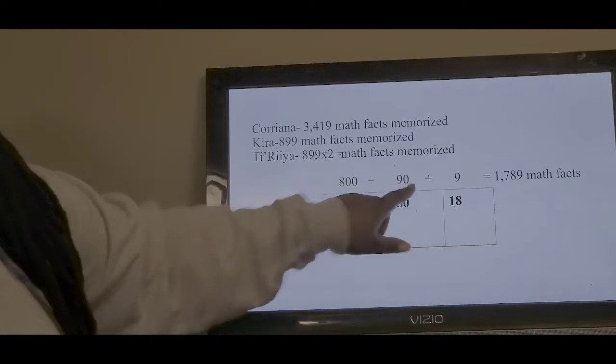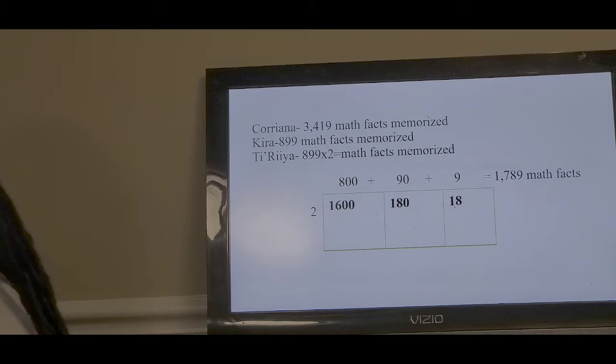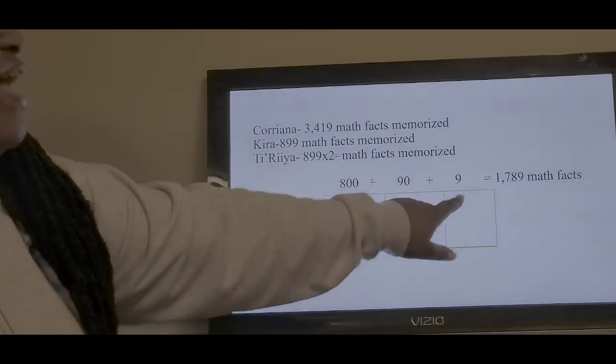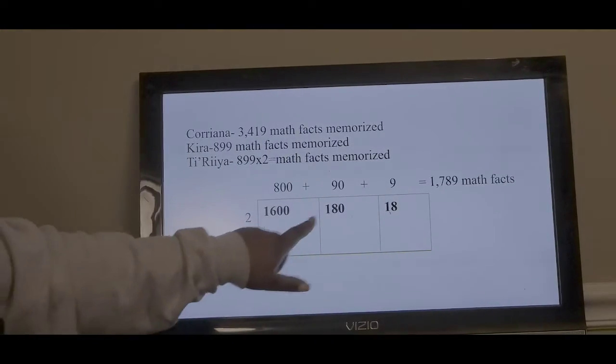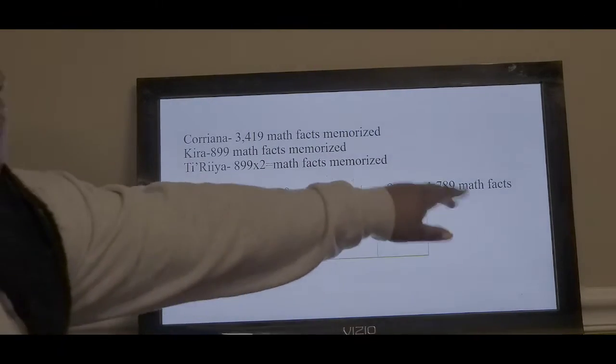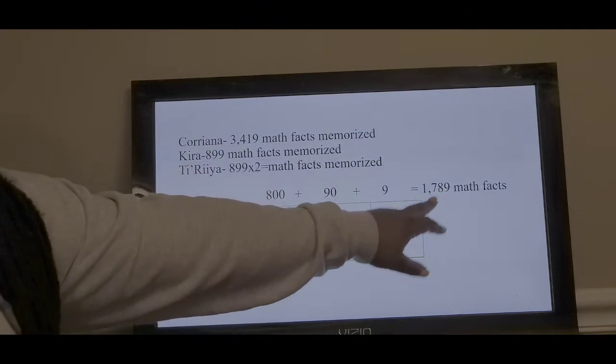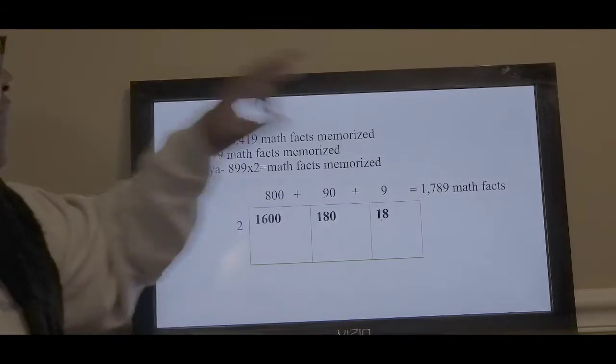Same here. 2 times 9 is 18, then you bring down your zeros, so you have 180. And 2 times 9 is 18. Then we add all of these together, and that gives us 1,789 math facts. Now we know that Taraya has 1,789 math facts memorized.